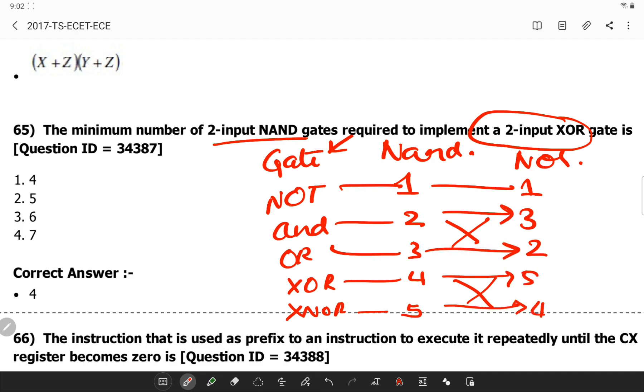Now what is the question? Implementation of XOR gate using an AND gate. The answer is 4. Hope you understand it.